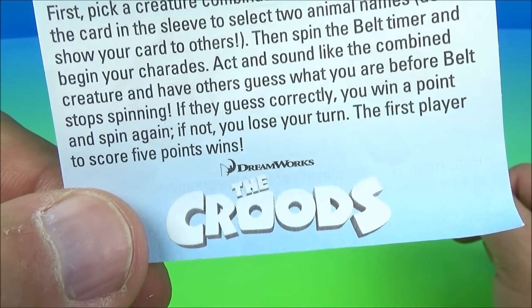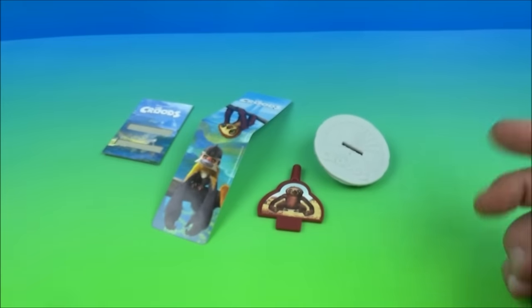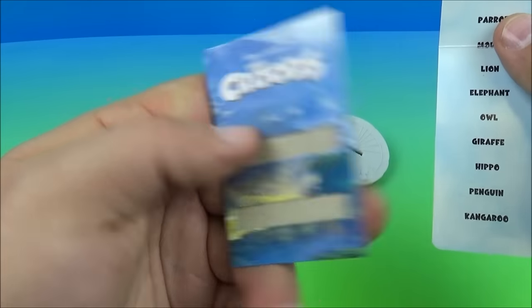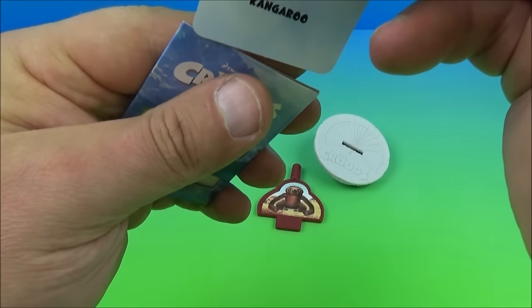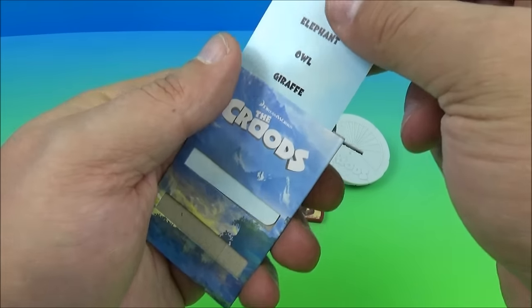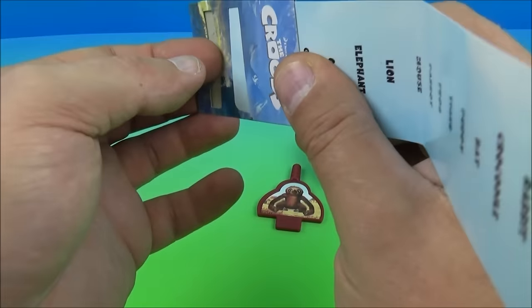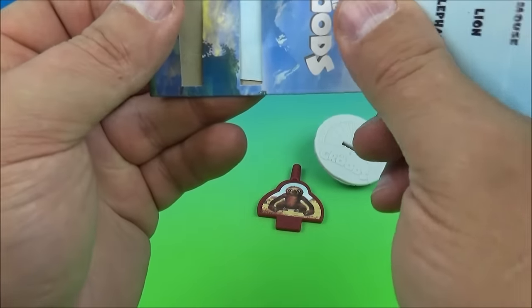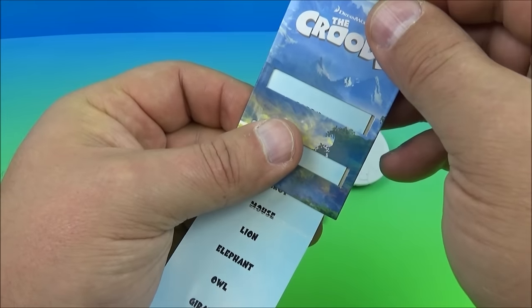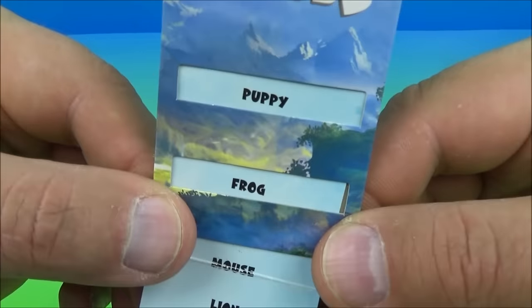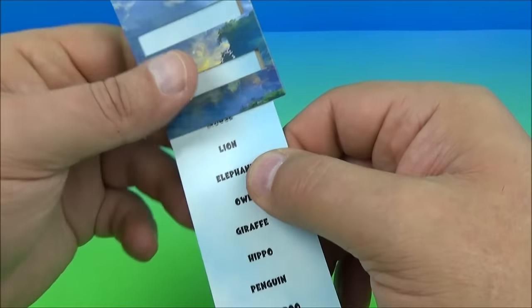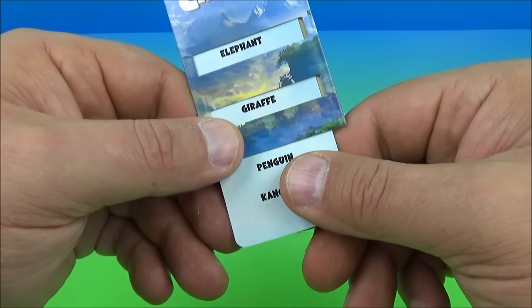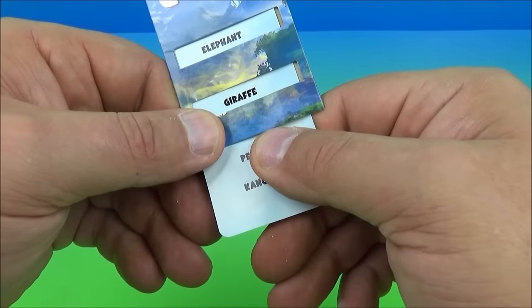If they guess correctly you win a point and spin again. If not, you lose your turn. The first player to score five points wins. This is great, seems like all kinds of fun. So here's the card, that's kind of nice, and here are all the animals here. And then here's the other piece of the card, we slide this in just like so. There you go, so you would take it and that one is a puppy frog, that's great. And here is a parrot and a lion. Can you imagine? Somehow I'm picturing these two animals combined.